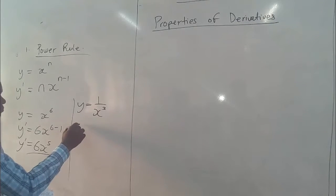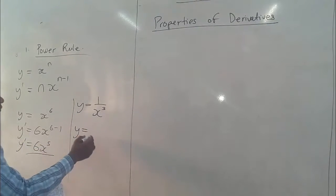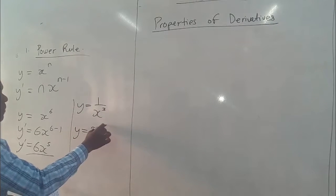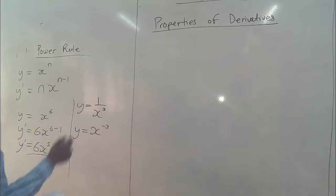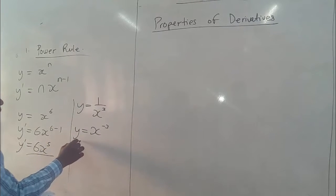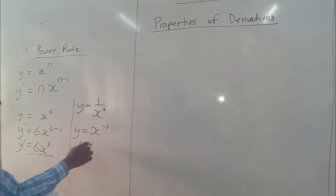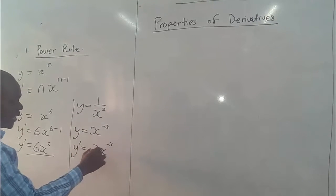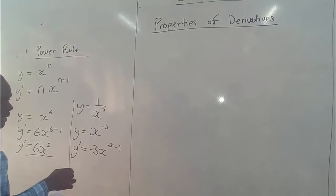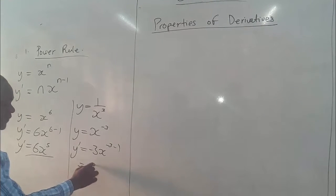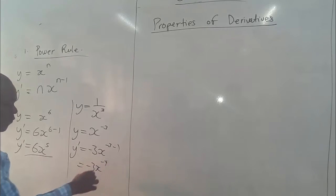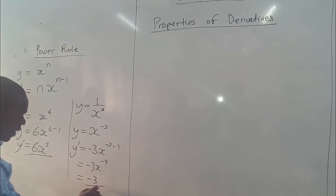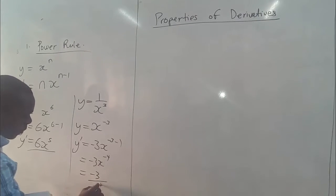So here y, you can rewrite it in a linear form using indices, so that you get h to the power minus 3. Remember this from indices. So now our y prime, that's first derivative, becomes negative 3 by h to the power negative 3 minus 1. So that we get negative 3h to the power minus 4, which becomes negative 3 over h to the power 4.